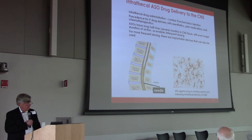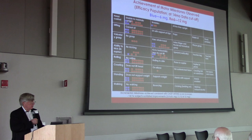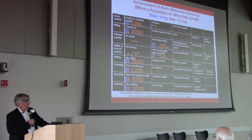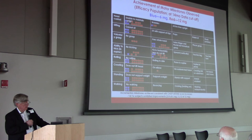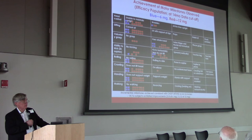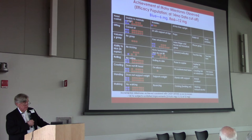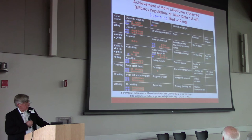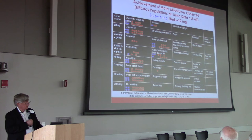We inject it into the spinal fluid and it gets into those nerve cells — the brown color in these cells is the ASO getting in where we want it to be. Shortly after I got here we treated the very first infant anywhere with this compound. This chart shows what we saw after 14 months of treatment. The red boxes are kids in the higher-dose group; the blue boxes include that very first infant and are the lower-dose group.